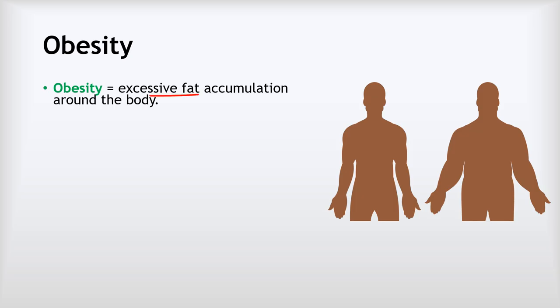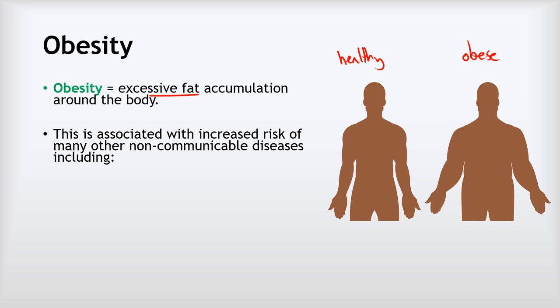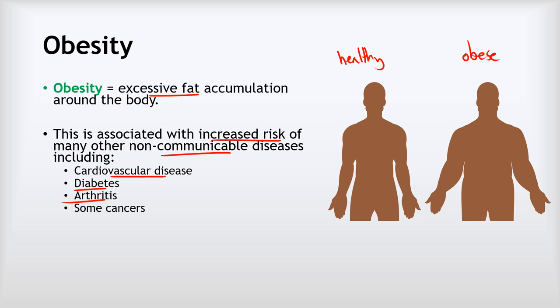Our next topic is obesity. Obesity involves excessive fat accumulation around the body — we can see here a person of healthy weight and a person who is obese, the difference being the obese person has more fat accumulated around their body. This is associated with an increased risk of cardiovascular disease, diabetes, arthritis, and some cancers. It's important to note there are plenty of obese people who aren't experiencing any of those things, which is why we talk about risk factors rather than definite causes.